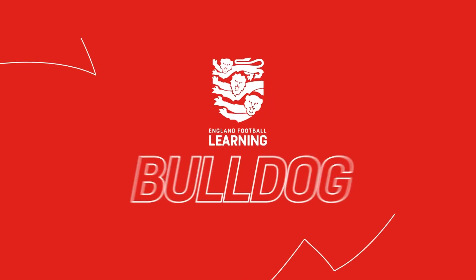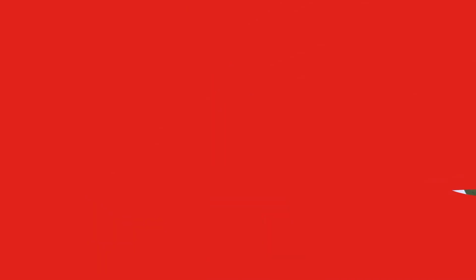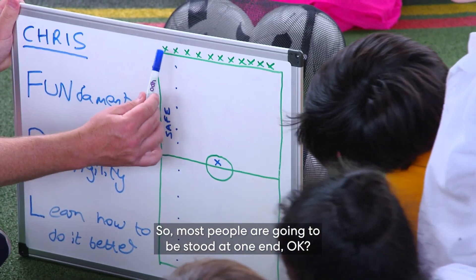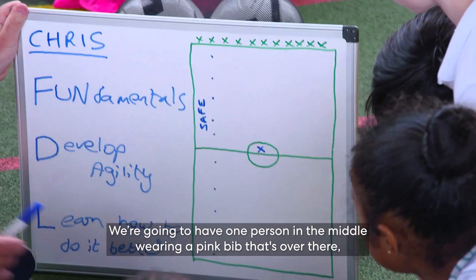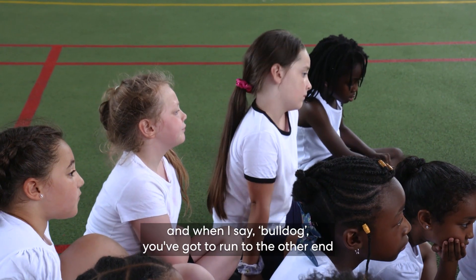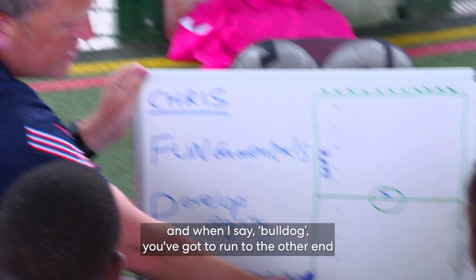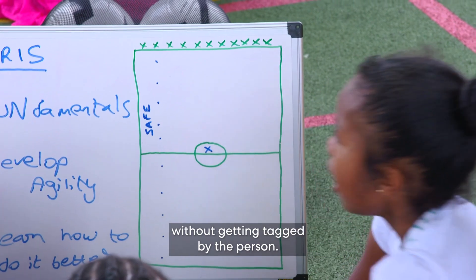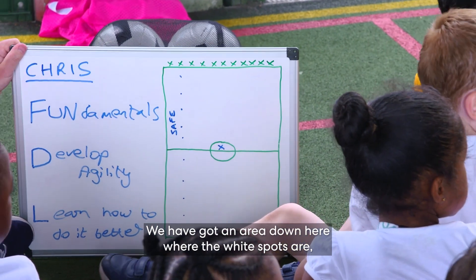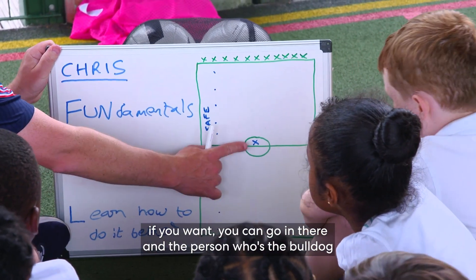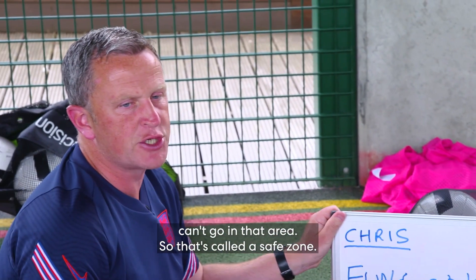On that note, we're going to watch one of the games that you might use as part of your high-quality PE curriculum, and then we'll have a conversation and delve into some of the things we've seen. Most people are going to be stood at one end, and we're going to have one person in the middle wearing a pink bib. When I say bulldog, you've got to run to the other end without getting tagged. There is a safe zone area marked with white spots where the bulldog can't go.